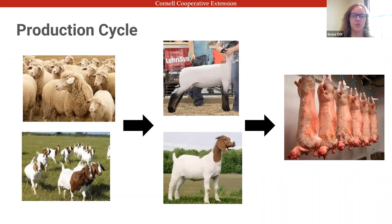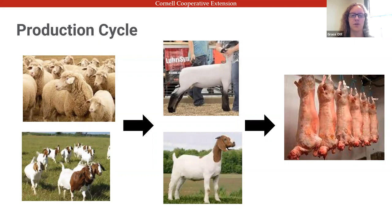At typical market weight, lambs will be about 90 to 120 pounds and will reach that at about five months of age. In stores, 'lamb' is any meat from a sheep under a year old; if it's over a year old it's referred to as mutton, which is less tender and flavorful. For goats, they reach market weight at about five to six months of age as well, but their typical market weight is much smaller — about 15 to 90 pounds.